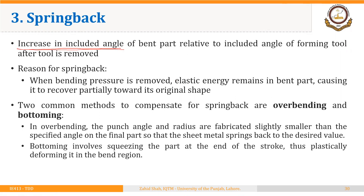Reasons for springback: when bending pressure is removed, elastic energy remains in the bent part, causing it to recover partially towards its original shape. So once a part is bent to a certain angle, the bent part tends to return to the original shape — that was a flat sheet or blank — resulting in an increase in the included angle or decrease in the bending angle.